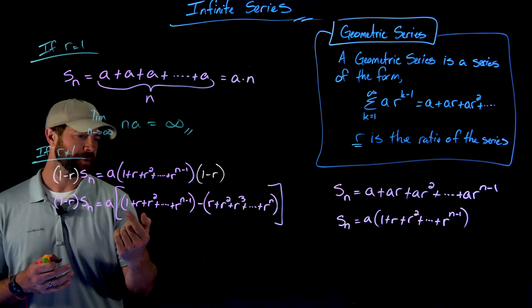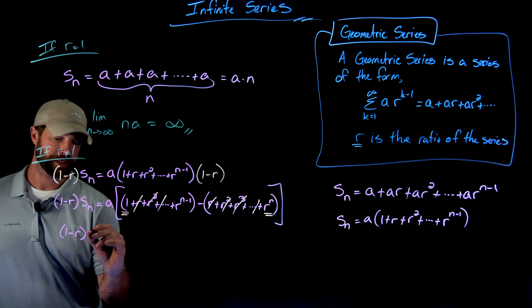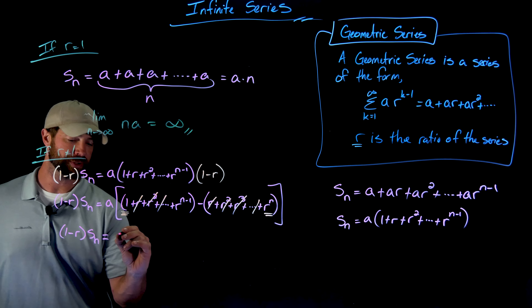This is one of the most beautiful proofs for the nth partial sum. So 1 minus r times the nth partial sum equals a times (1 minus r to the n). Then dividing both sides by 1 minus r — and since r is not equal to 1, we're not dividing by zero — we get that the nth partial sum equals a times (1 minus r to the n) over (1 minus r). This is an incredibly important formula that lets us attack any geometric series.